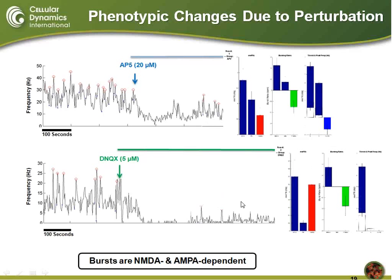Furthermore, the DNQX condition blocks more of the mean firing rate, so the influence on inhibition is even higher. The influence on excitation shows a very substantial decrease, and there are no actual bursts that occur after the drug is added. So we can ultimately say that blocking NMDA activity substantially affects network behavior, but not to the level that blocking with DNQX does.